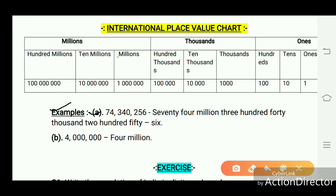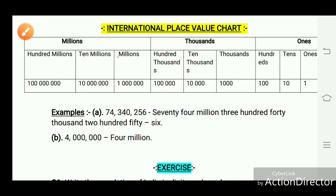Example A: 74,340,256. This number is read in the international system as seventy-four million three hundred forty thousand two hundred fifty-six. We put commas before each set of 3 numbers. The first set is ones, the second is thousands, and the third is millions.